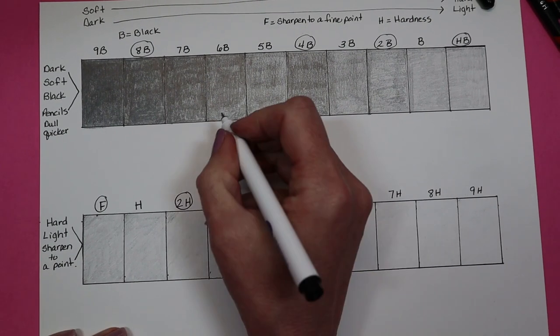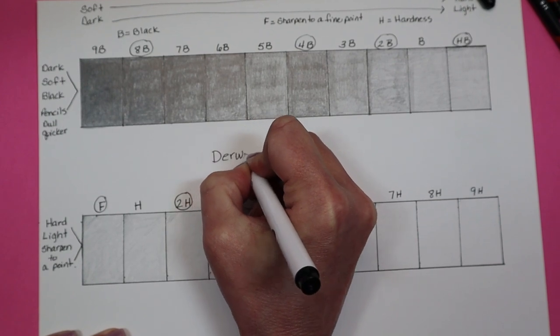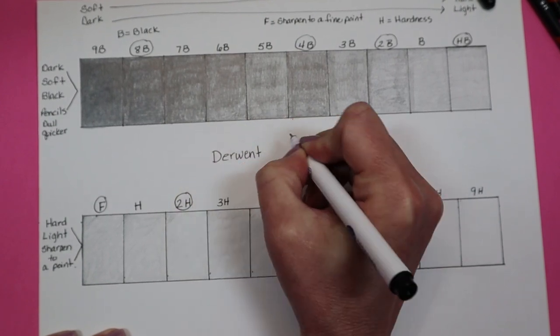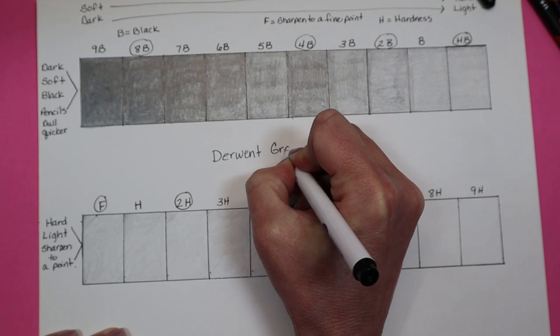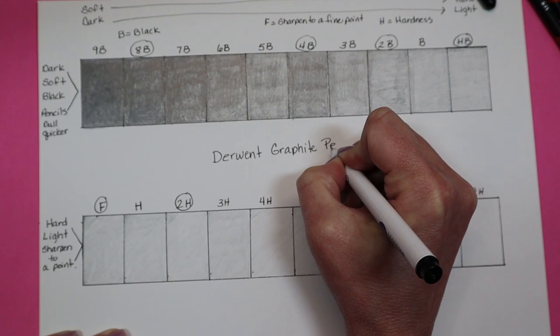I hope this helps take some of the confusion out of the grades and the numbers and letters on the graphite pencils. I hope you join me for my Derwent pencil set review when I draw a fox.